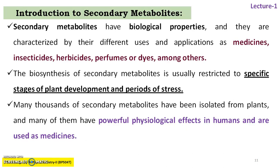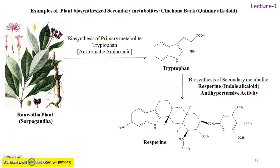At the initial stage of growing, a plant will not synthesize secondary metabolites — it will synthesize only primary metabolites. But after one or two years of growth, it will start synthesizing secondary metabolites. That is why it is said that secondary metabolite production is specific to the stage of plant development and periods of stress. Many thousands of secondary metabolites have been isolated from plants and many have powerful physiological effects in humans and are used as medicines. For example, Rauwolfia — the plant serpagandha — biosynthesizes the primary metabolite tryptophan, which then undergoes various biosynthetic pathways to form the secondary metabolite reserpine, an indole alkaloid that acts as an antihypertensive drug.